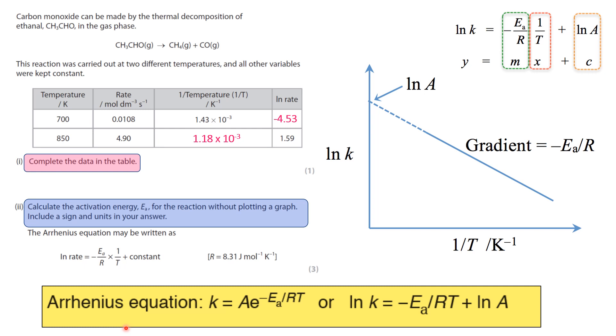And like we said earlier, it's analogous to y equals mx plus c. So obviously your 1 over T values would be x values, and your natural log of the rate would be the y values.